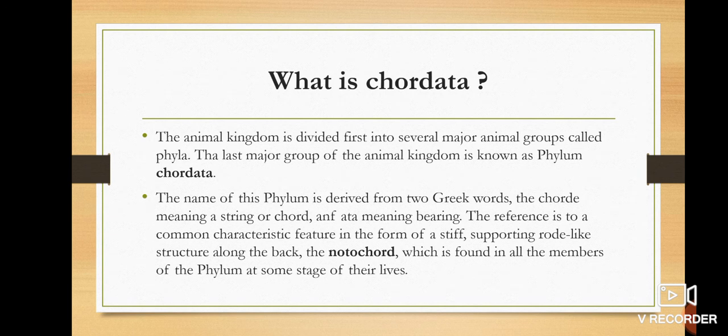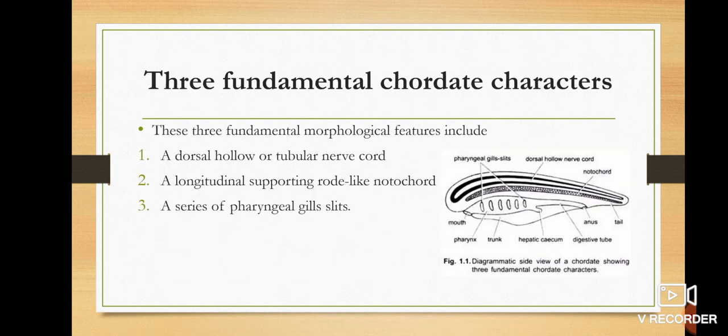All members of the phylum, at any stage or even some stages of their life, have this notochord present. Chordates have three fundamental characters. The first is a dorsal hollow and tubular nerve cord. The second is a longitudinal supporting rod-like notochord.